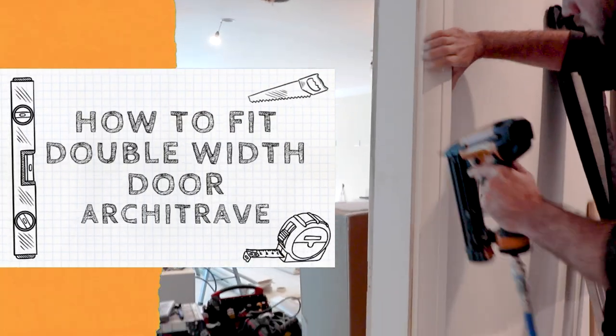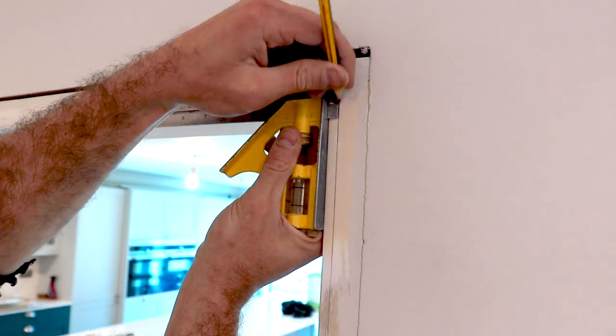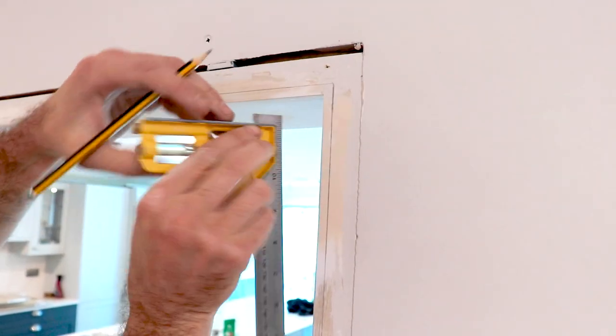In this video we're going to fit our architrave to a double door frame. Firstly you're going to need to make some markings around your door frame.